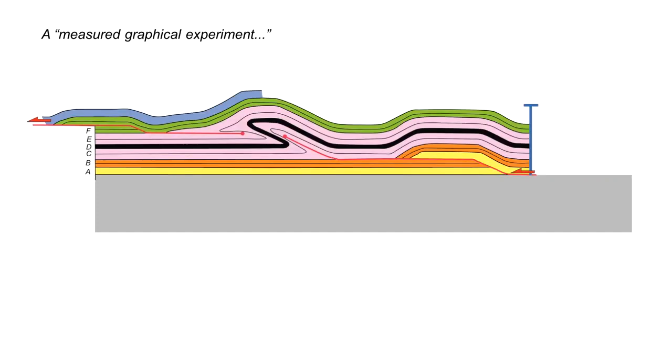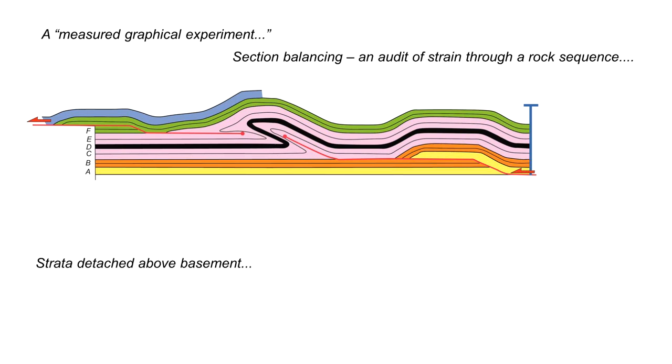So here we go this is the result of the contraction and you'll notice our blue marker has moved in towards the left and the section is being constructed to balance. In other words the horizontal contraction is equal for all the layers.